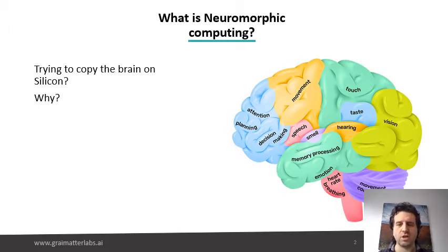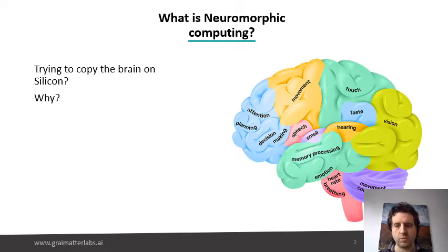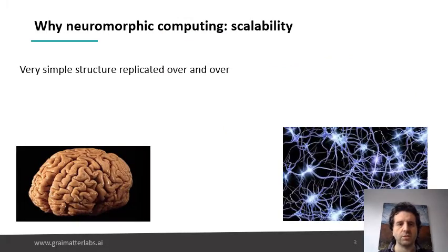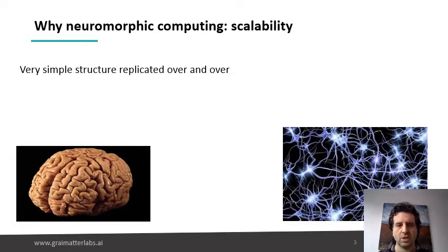And actually there are a few. I would say, if I try to choose the ones that I consider probably the most important amongst others, well, one of them is the scalability of the brain. One thing that the brain has is that essentially it is a very simple structure: you have neurons connected to each other by synapses, and that is essentially all there is to it in terms of structure.